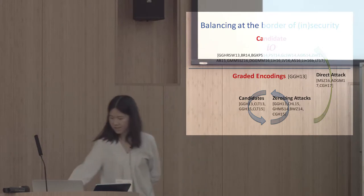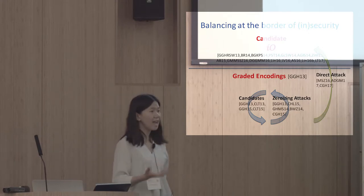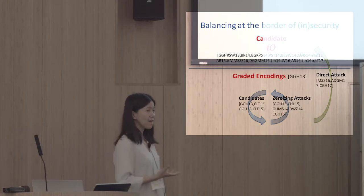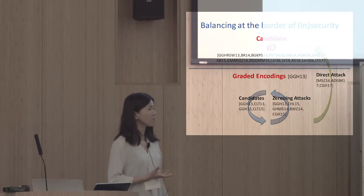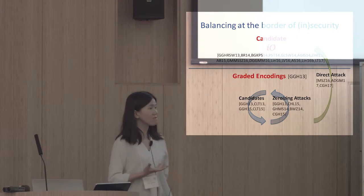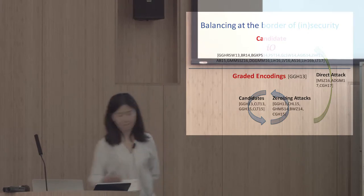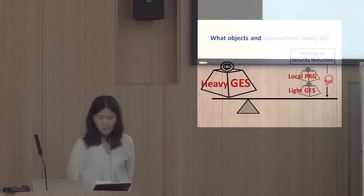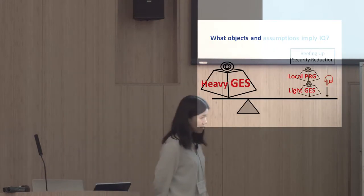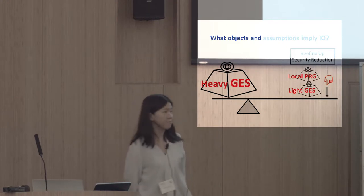The situation is really that we are balancing on the border of security and insecurity. Many IO constructions are today still not known to be directly broken. However, we would also like to base the security of IO on a more solid foundation. So the question we ask towards that goal is: what objects and assumptions can actually imply IO?